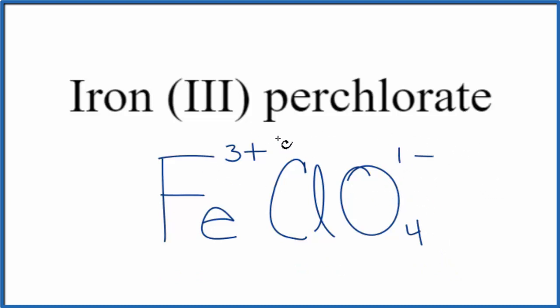To do that we could put parentheses around the perchlorate ion and put a three out here. Three times one minus that's three minus, three minus and three plus that would give us a net charge of zero.